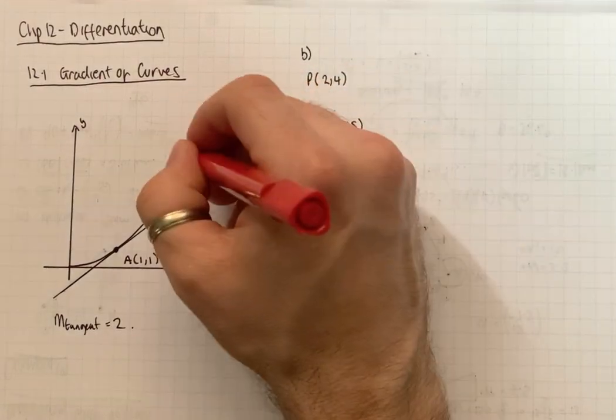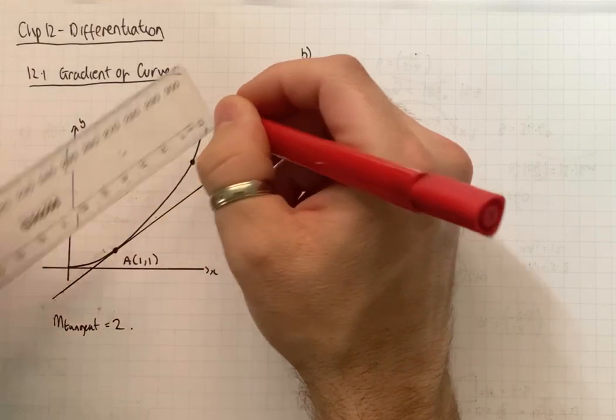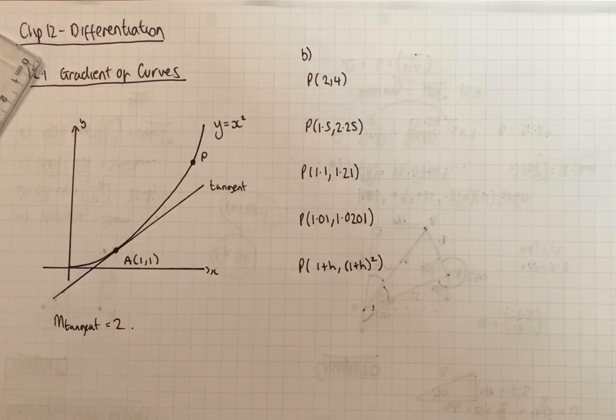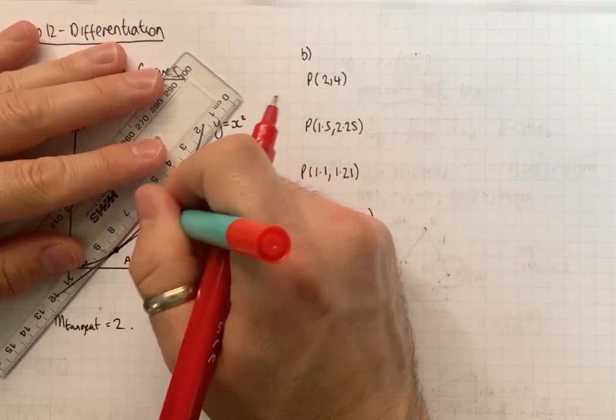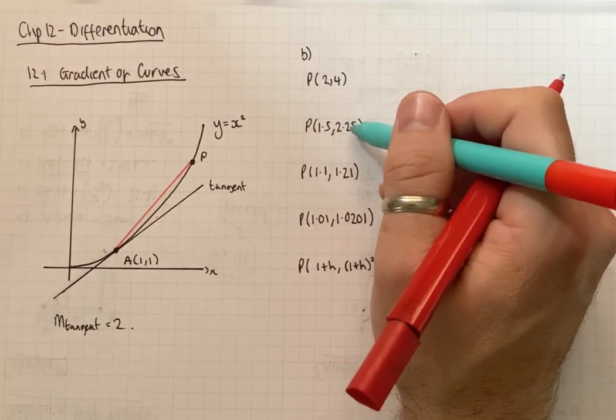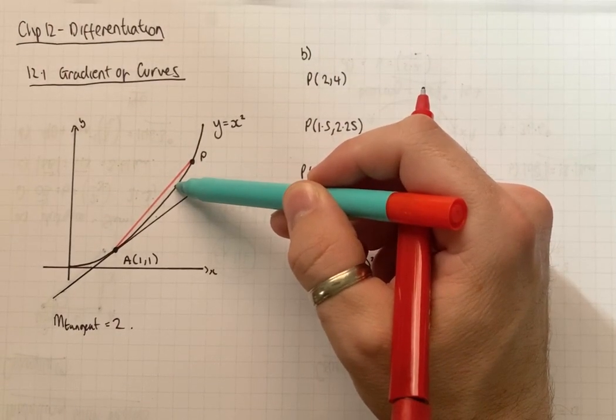Now what I'm going to do though is work out the gradient of some chords. So I'm going to work out the gradient from A to P. Where we've got different coordinates for P. So it starts up at 2, 4, 1.5, 2.25.